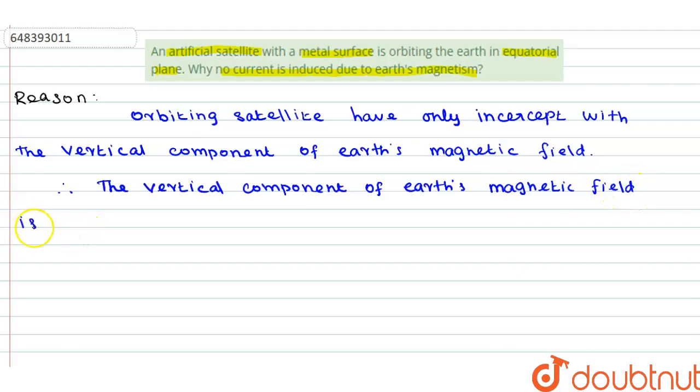If you see in the equatorial plane, that's why no current is induced in the equatorial satellite.